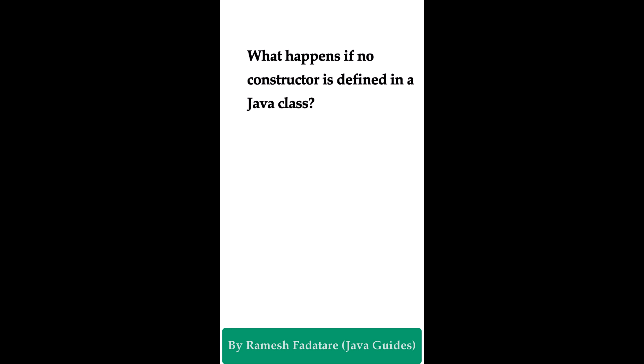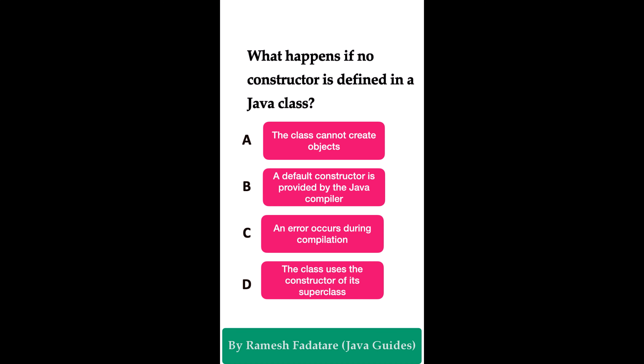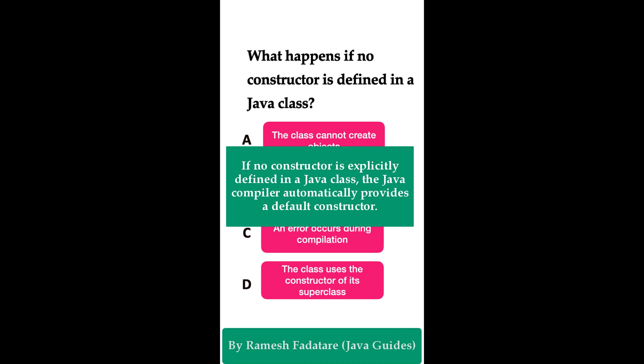What happens if no constructor is defined in a Java class? Option A: the class cannot create objects. Option B: a default constructor is provided by the Java compiler. Option C: an error occurs during compilation. Option D: the class uses the constructor of its superclass. The correct answer is option B. Whenever you don't create any constructor in a class, the Java compiler automatically provides a default constructor. When you create an object of that class, the default constructor is called.